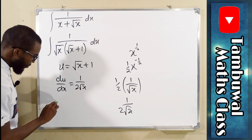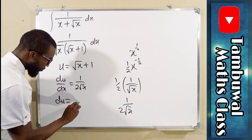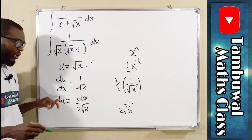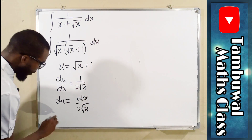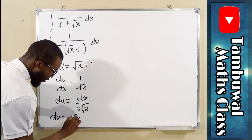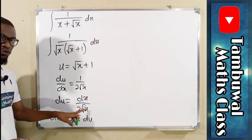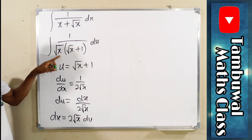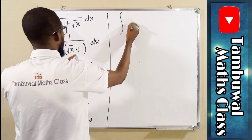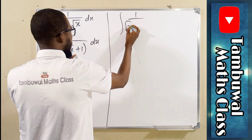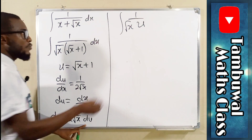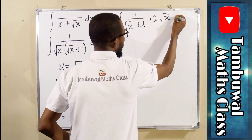We can make dx the subject. From here you can see du will be equal to dx over 2 root x, if you multiply both sides by dx. From here you can see dx will be equal to 2 root x du, if you multiply both sides by 2 root x. So now we can substitute here. Remember, we let root x plus 1 to be equal to u. So this is the same thing as 1 over root x times u, and dx is now equal to 2 root x du.